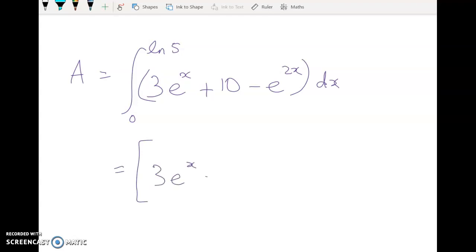Integrating this, we get 3e to the x. In fact, I think most of you have probably stopped watching by now. There we are. Minus a half, whoops, minus a half e to the 2x.